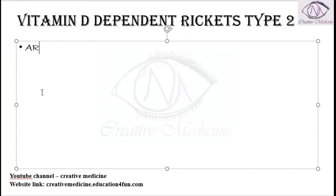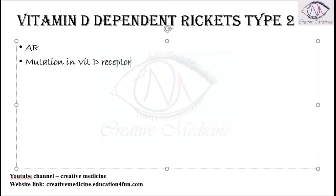Vitamin D dependent Rickets type 2 is an autosomal recessive disorder. The defect is a mutation of the vitamin D receptor. Because of this mutation, 1,25-dihydroxyvitamin D is found to be increased, whereas 25-hydroxyvitamin D is normal.